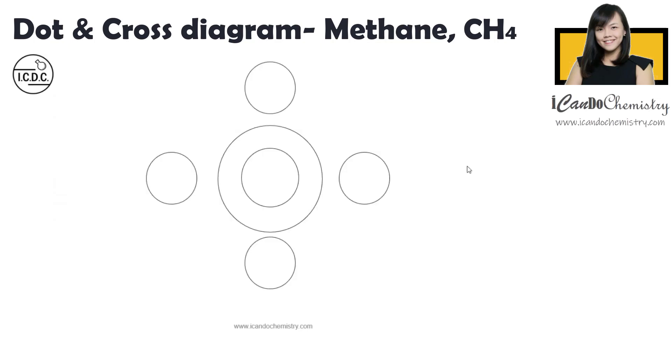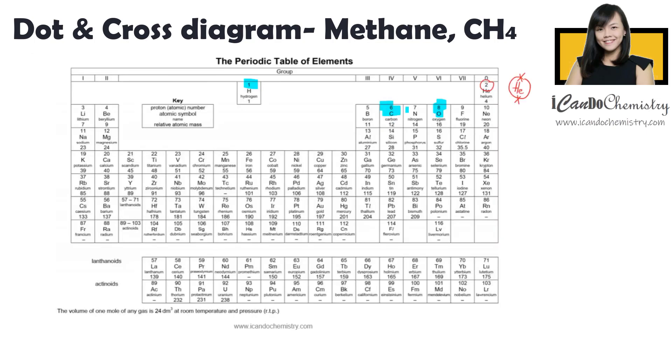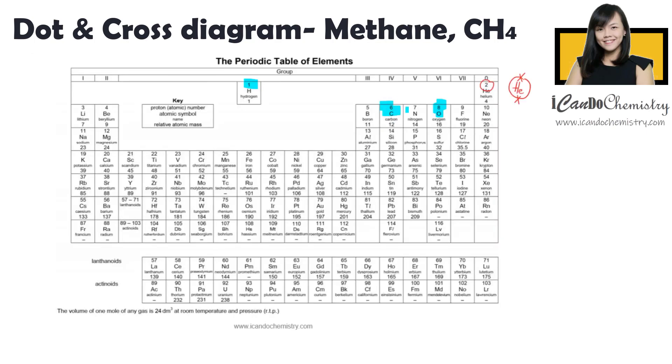Now what about CH4, which is methane, our natural gas? What is the number of electrons of carbon? Carbon is over here. It has six electrons. The first shell can only hold up to two electrons. So carbon has two electrons in the first shell, and the remaining four electrons will be in the outermost shell.